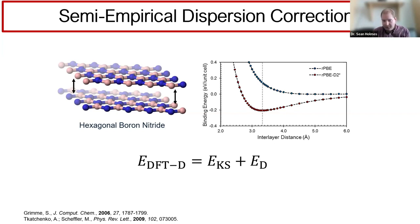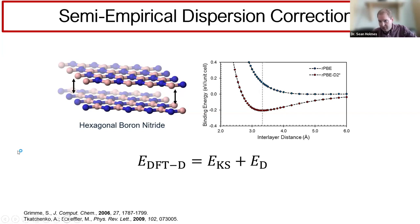We addressed this through DFTD methods—semi-empirical dispersion corrections in which a simple term is added to the Kohn-Sham energy to correct for otherwise absent interactions. This can be visualized through layered hexagonal boron nitride: with no dispersion correction, there is no energy minimum for interlayer distance. Introducing a dispersion interaction yields an energy minimum corresponding very well to the experimental interlayer distance.